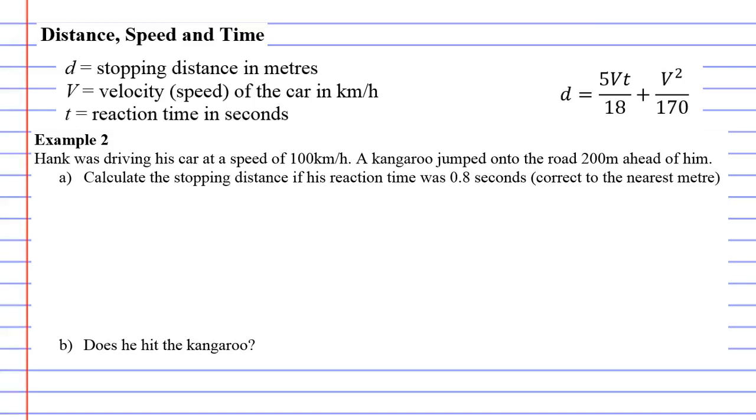All right, distance, speed, and time. This is example two and it says Hank was driving his car at a speed of 100 kilometres an hour and a kangaroo jumped onto the road 200 metres ahead of him.